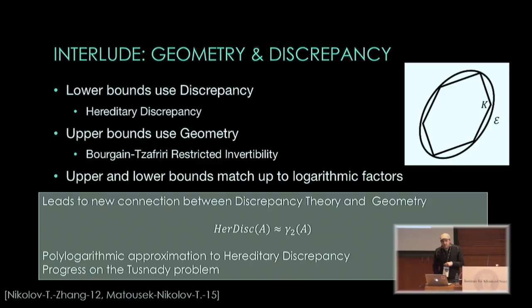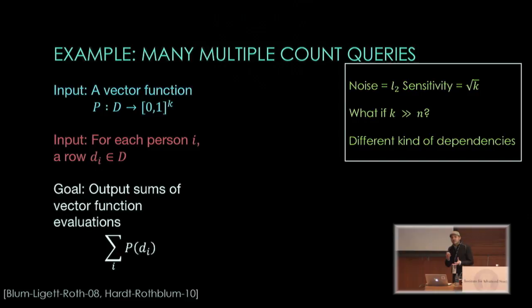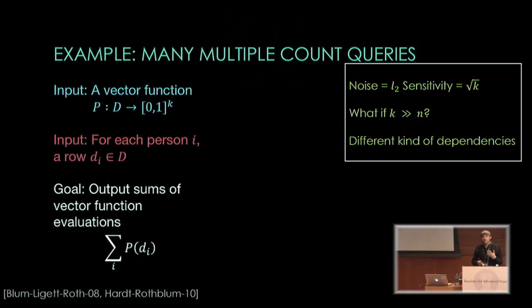Another setting with dependencies is when you have far more queries than people in the database. The dependencies come from a VC-dimension type argument. Blum, Ligett, and Roth, and further work by Hardt and Rothblum, showed that you can exploit these dependencies to get much less noise than the Gaussian mechanism would give.